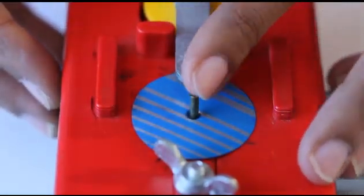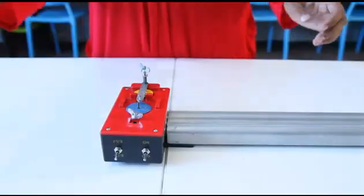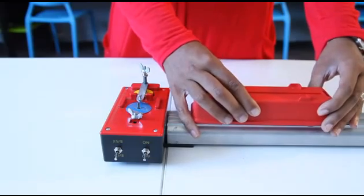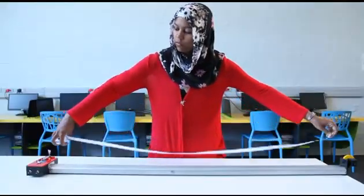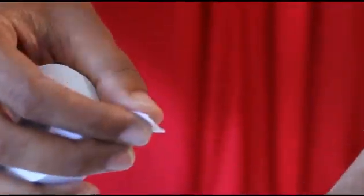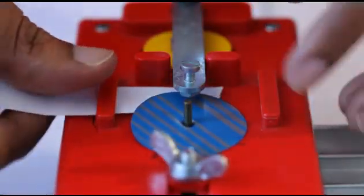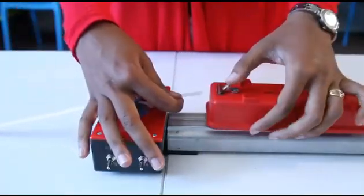Place a trolley of one kilogram onto the track, measure a length of ticker tape equal to the length of the rail track, feed the tape underneath the carbon paper on the ticker timer.